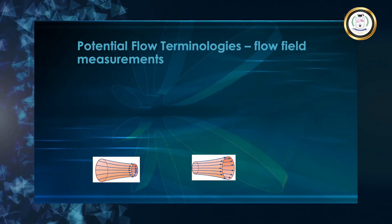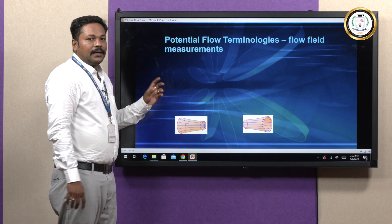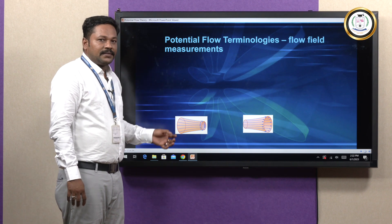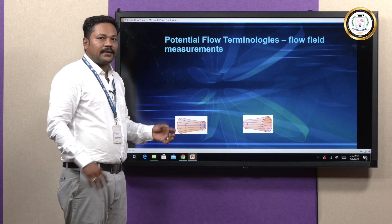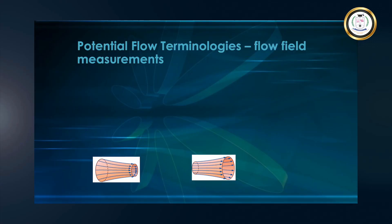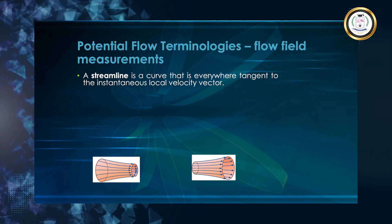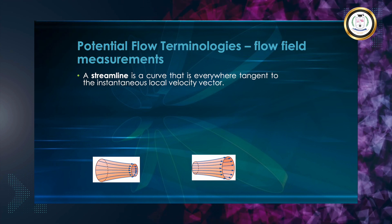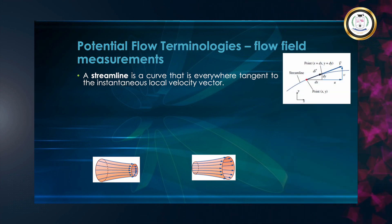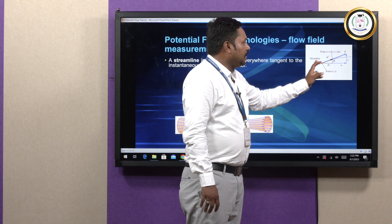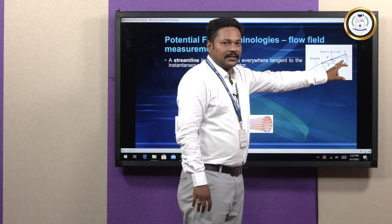Coming back to potential flow terminologies — flow field measurements. What are the flow field parameters? We have streamlines, streaklines, and pathlines. Streamlines is a curve that is everywhere tangent to the instantaneous local velocity vector. The line drawn tangential to the velocity is nothing but the streamline.